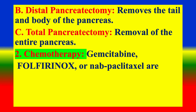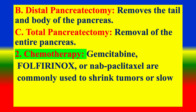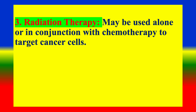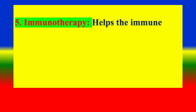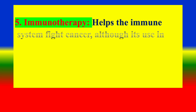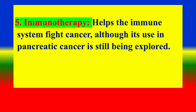Chemotherapy regimens such as Gemcitabine, FOLFIRINOX, or nab-paclitaxel are commonly used to shrink tumors or slow progression. Radiation therapy may be used alone or in conjunction with chemotherapy to target cancer cells. Targeted therapy drugs such as erlotinib target specific pathways in cancer cells. Immunotherapy helps the immune system fight cancer, although its use in pancreatic cancer is still being explored.